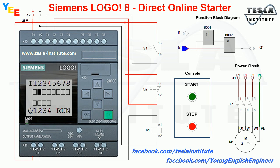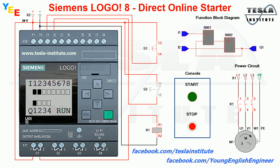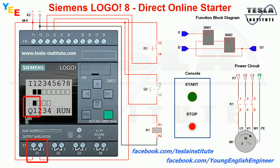Now let's see how it works in our DOL circuit. As push button S2 is normally closed, when it is not pressed it always gives a plus 24 volts on input I2. On the LCD display we see that input I2 is in a high state. The high state is also visible on input I2 of the function block diagram. Then when we press push button S1, plus 24 volts appears on input I1, and output Q1 goes to high state.